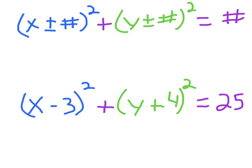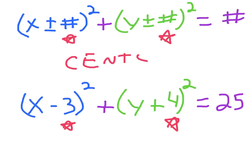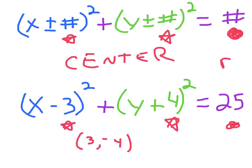What do those numbers signify? The numbers inside the parentheses with the x and the y signify the center of the circle. And remember, it's kind of backwards — so if it says minus 3, that means the x-coordinate is positive 3. If it says plus 4, its coordinate is minus 4. And the number on the right side — the 25 — that is the radius squared.